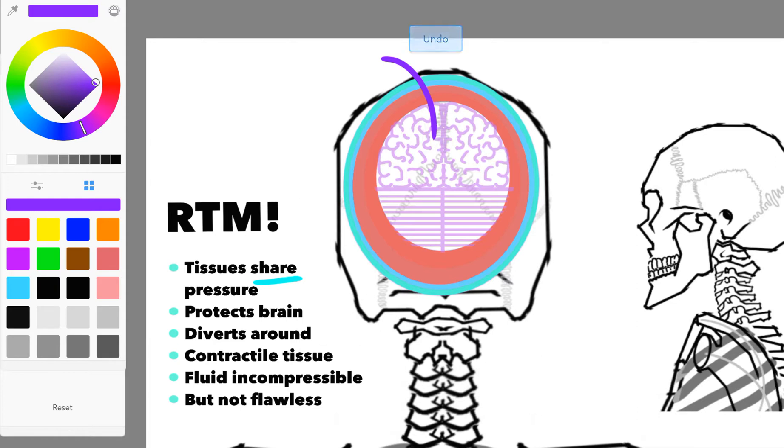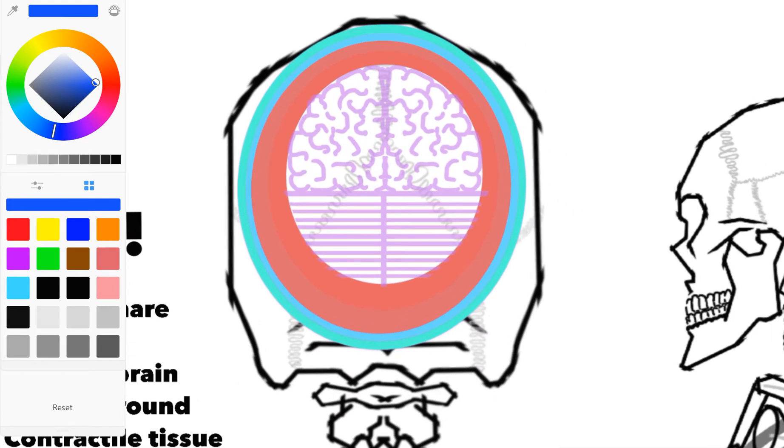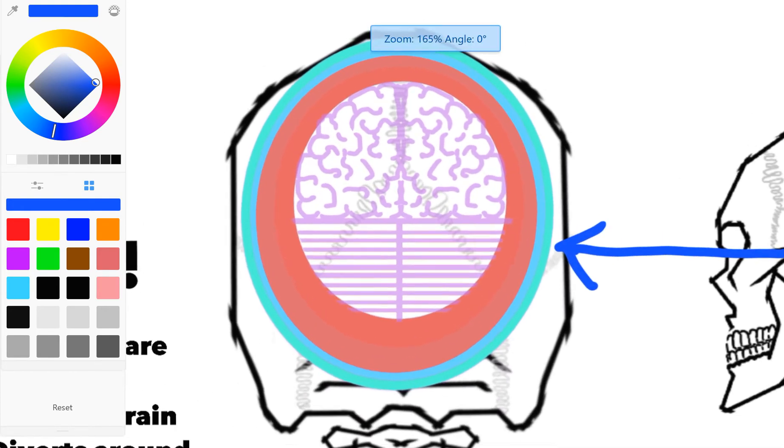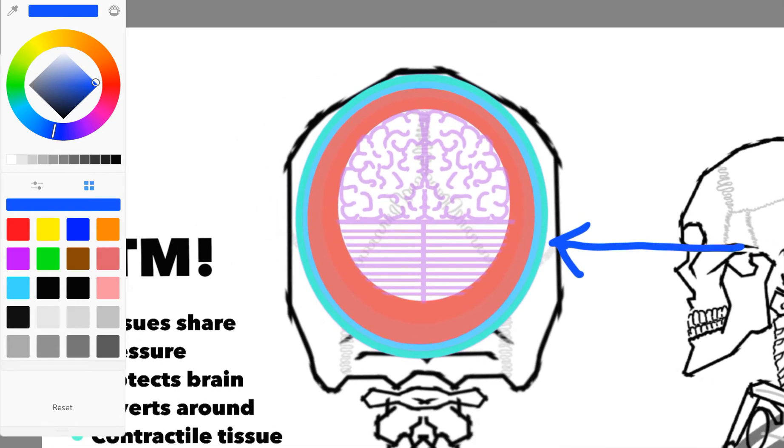We have this reciprocal tension membrane around the brain. Ultimately what it wants to do is divert the pressure. Let's say we take a force to the side of the head - it wants to divert the pressure circumferentially around the brain so it ends up sharing that load throughout this system.